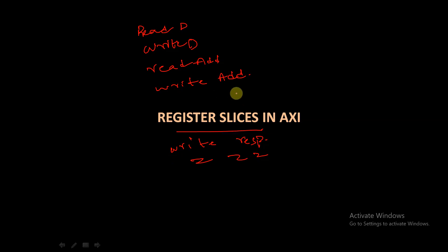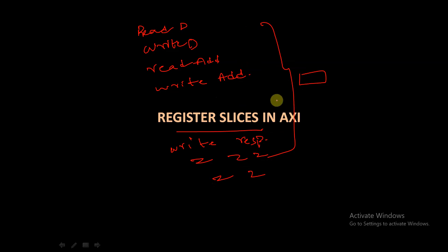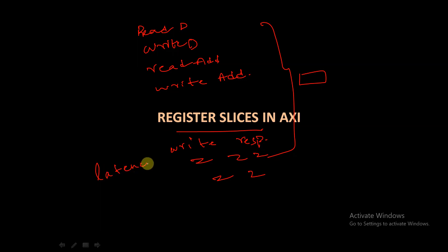Register slice allows us to insert additional pipeline registers in any of these five channels. This introduces a trade-off between the cycles of latency and the maximum frequency of operation. Because of adding these register slices, the latency may increase, but we can obtain a higher maximum frequency of operation.